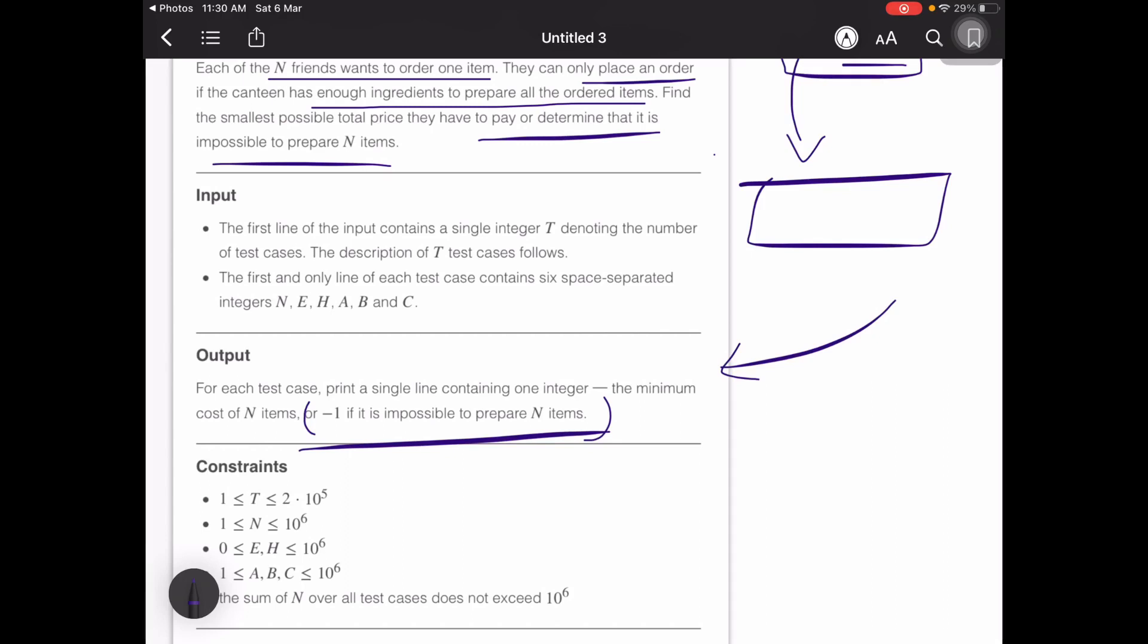The input says that you have T test cases, the condition is up to 2 times 10 to the power 5. Then the next line you have n the number of friends, E the eggs remaining, H the chocolate bars remaining, and A, B, C are respectively the prices of the items.